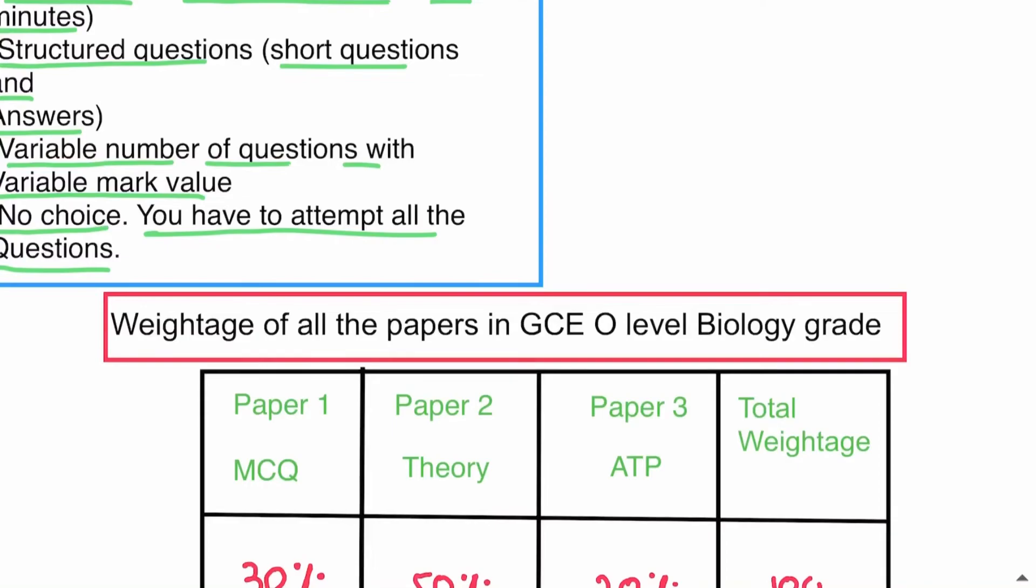Paper 2 is the most important paper with 50 percent weightage, so you have to score very well in Paper 2 to get an A. But obviously, other papers also contribute to the weightage, and all papers must be attempted very well to achieve an amazing grade.